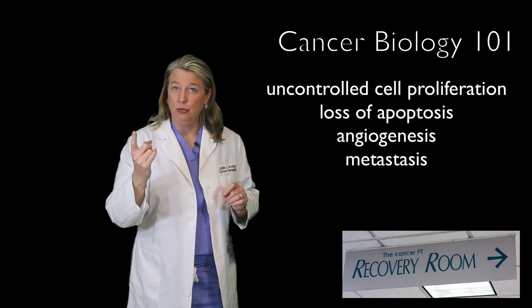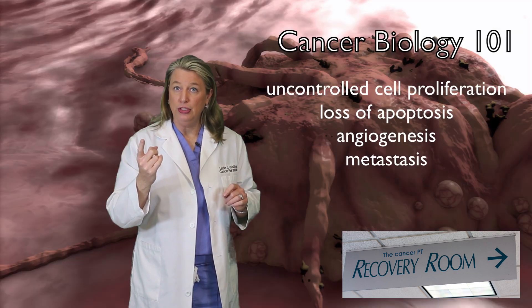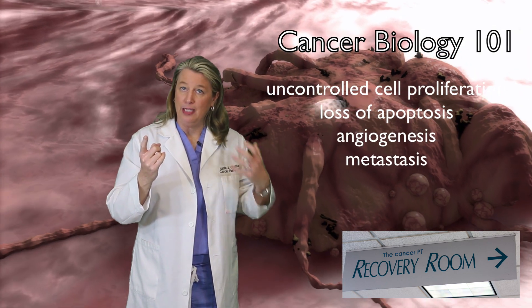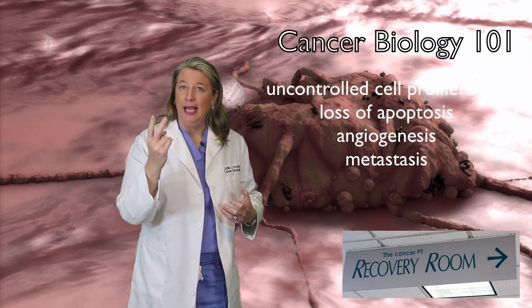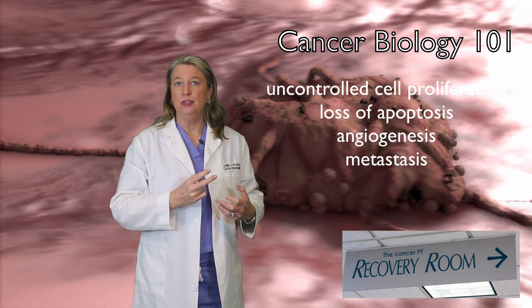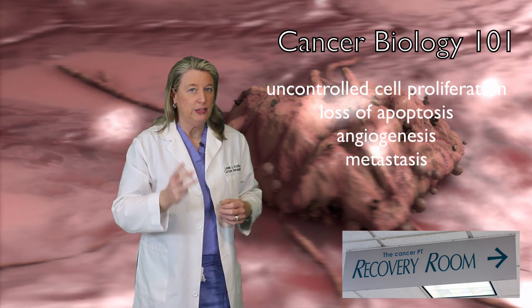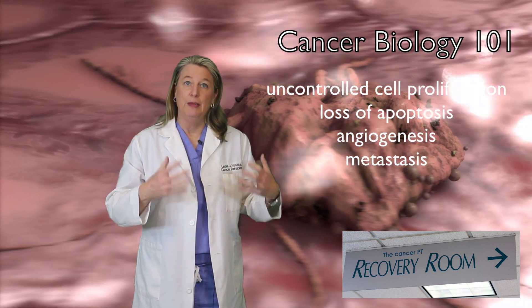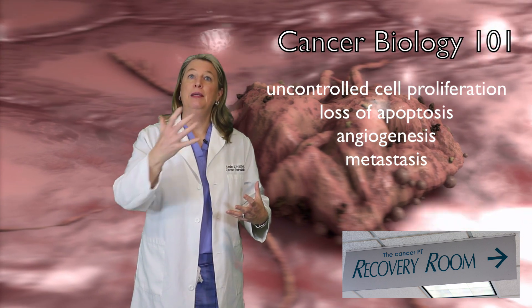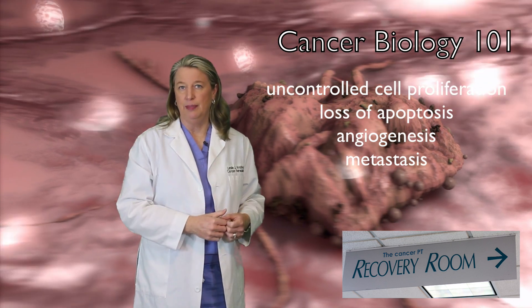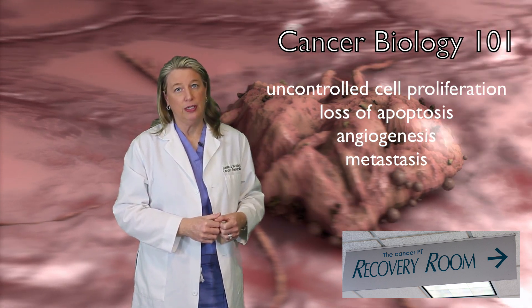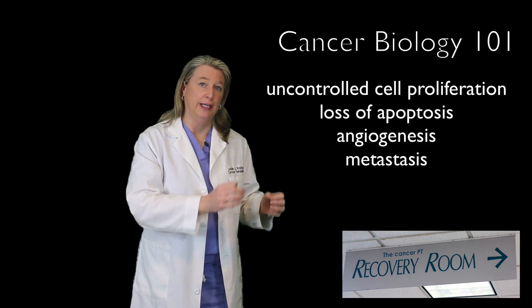So in review, the four characteristics that make cancer so sneaky are: uncontrolled proliferation, or a non-stop overgrowth of cells; a lack of apoptosis, or cell death; angiogenesis, the tumor's ability to make its own blood supply; and metastasis, the ability of cancer cells to travel to other parts of the body.